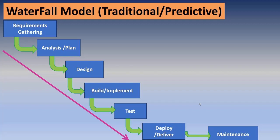In a six-month implementation phase with multiple developers, after two months the developers finish their part and sit idle while waiting for the testing team, which is not ready until all implementation is done. The developers are not productively utilized during that waiting period. That is the main disadvantage of the Waterfall model.